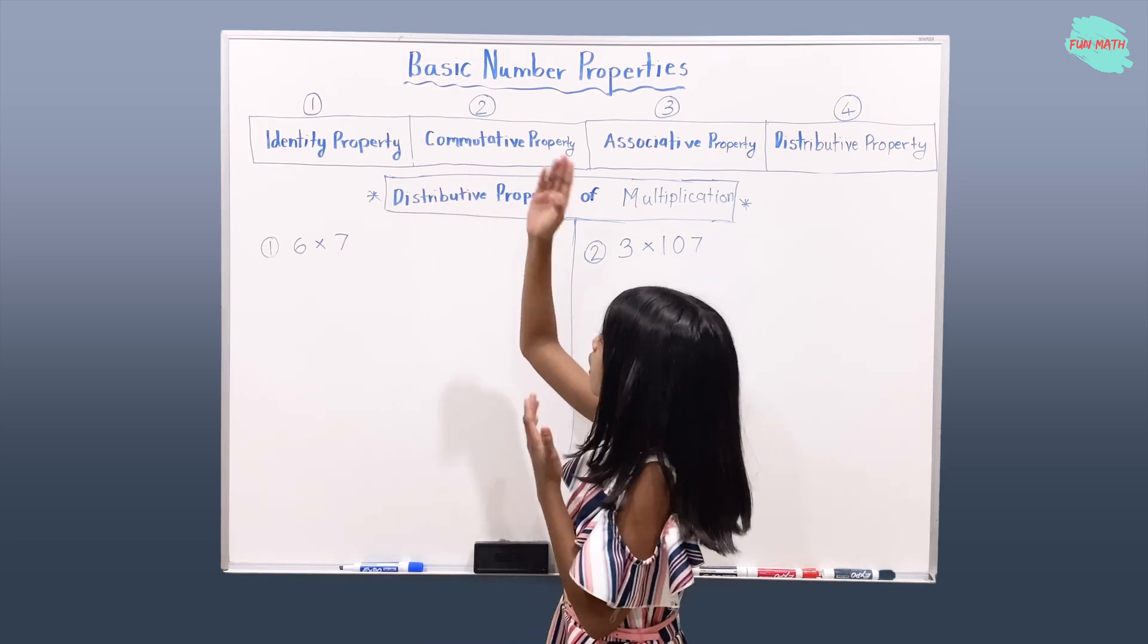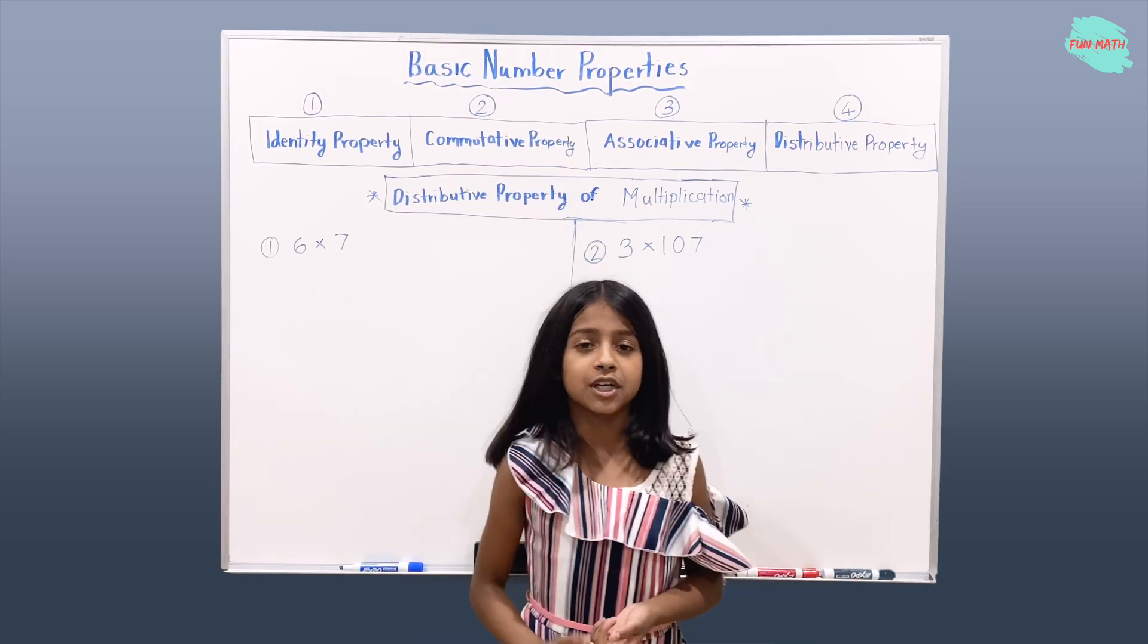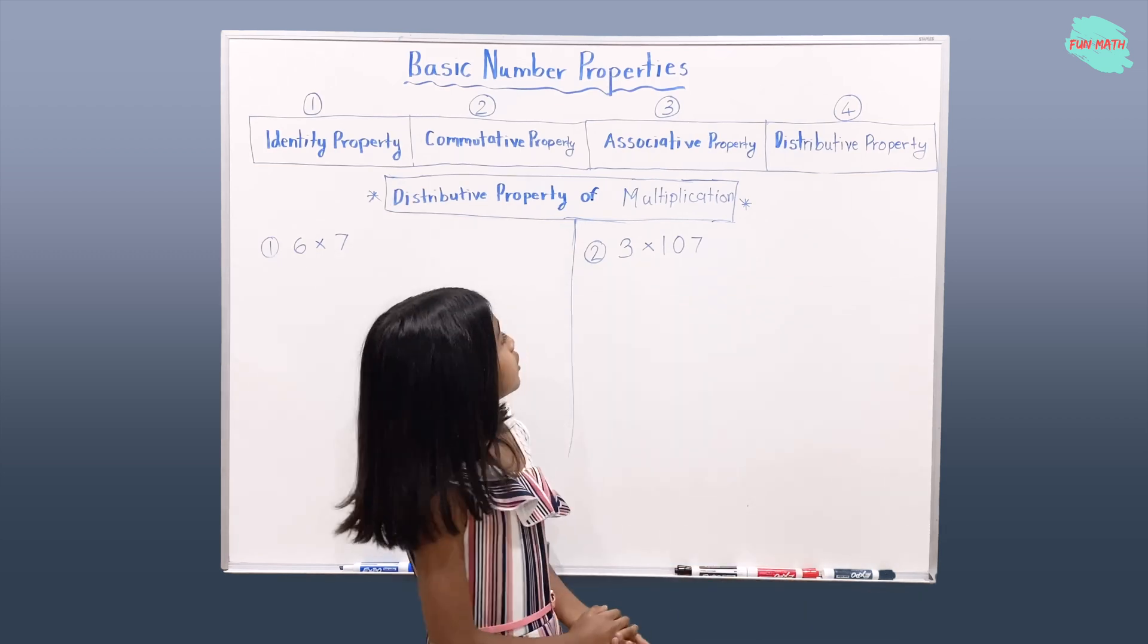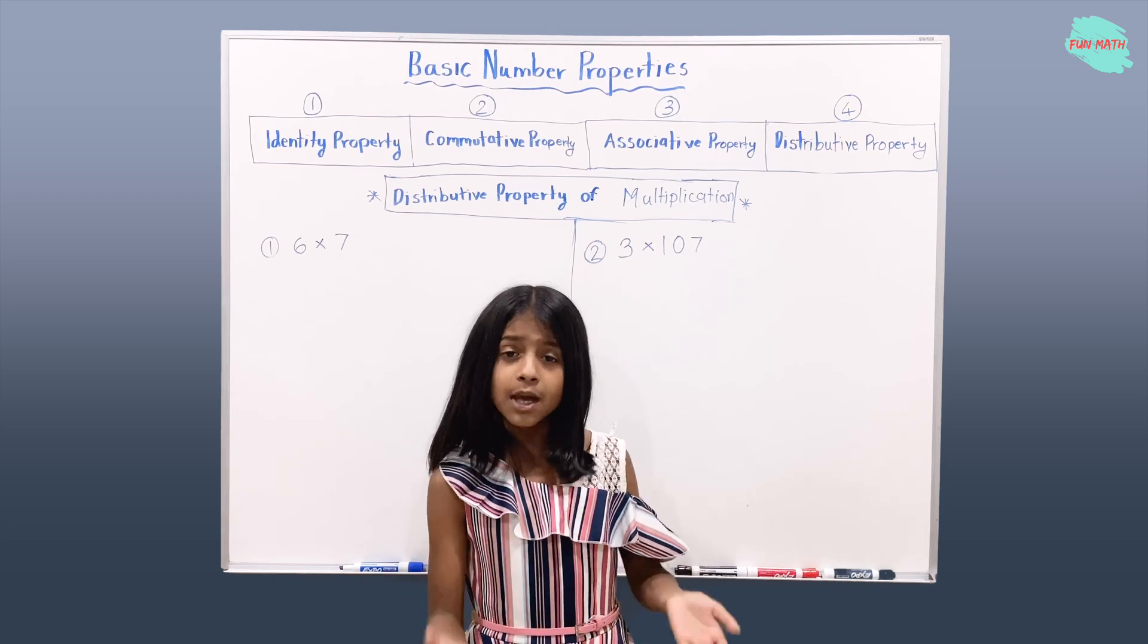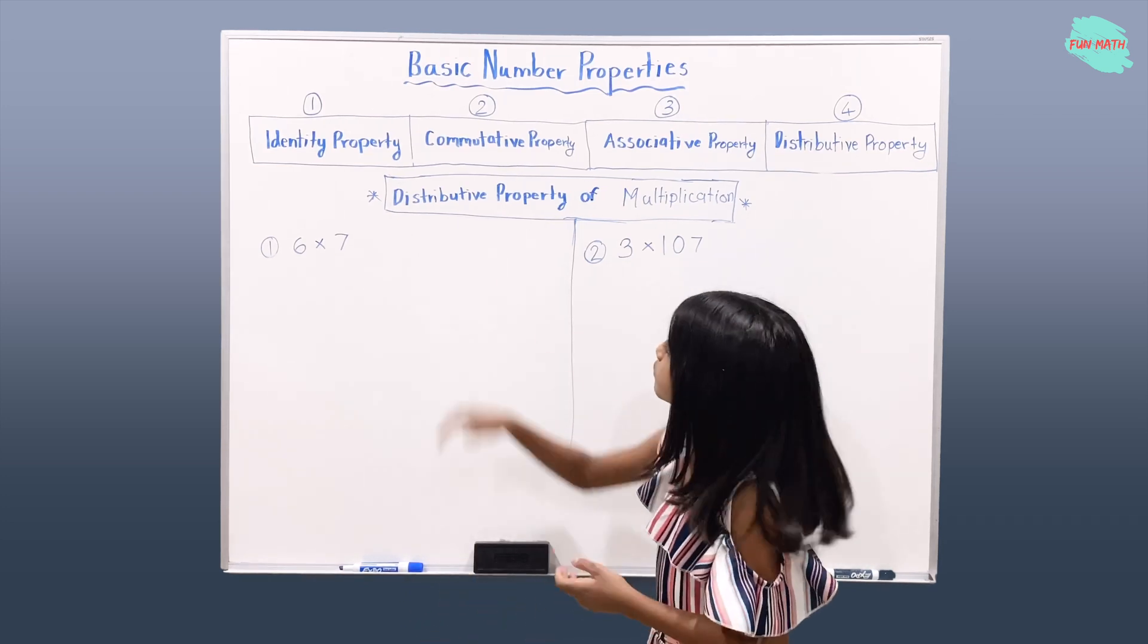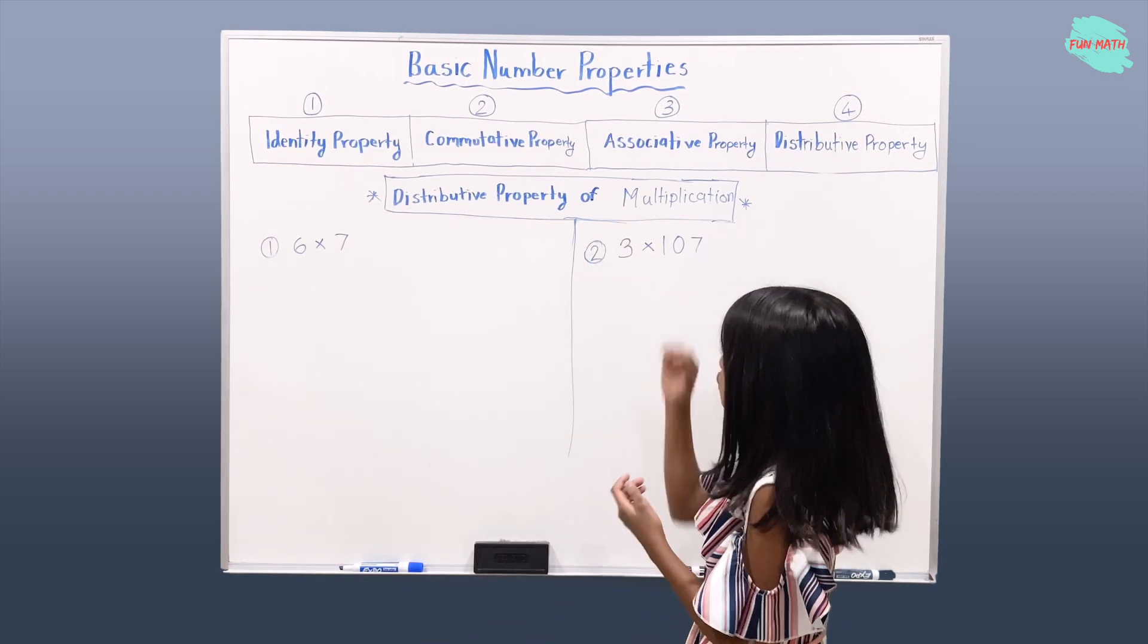We already talked about the commutative property of multiplication and addition. We already also talked about the associative property for multiplication and addition. And today we're going to be talking about the distributive property of multiplication.